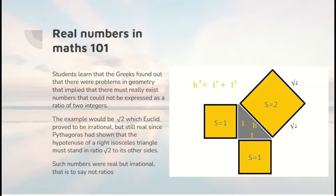Students learned that the Greeks found out that there were problems in geometry that implied the existence of numbers that couldn't be expressed as the ratio of two integers. The most famous example is root 2, which arises if you diagonally cut across a square. So let's assume the original sides of the square were 1 and 1, diagonally cut across. What's the length of the hypotenuse?